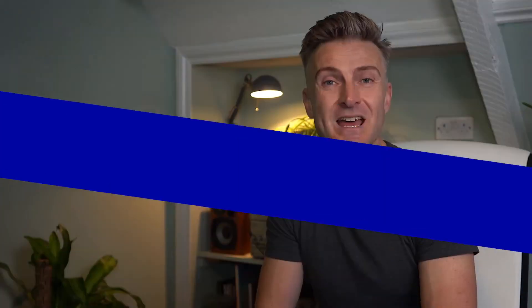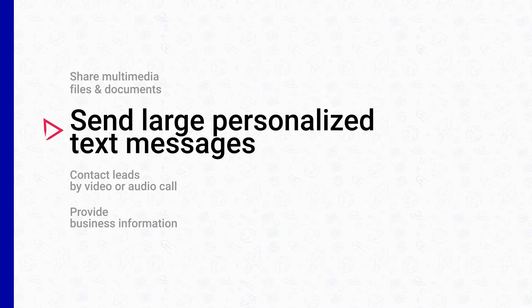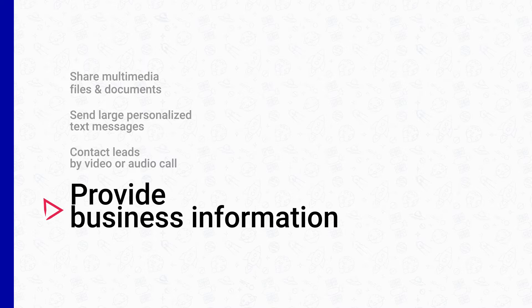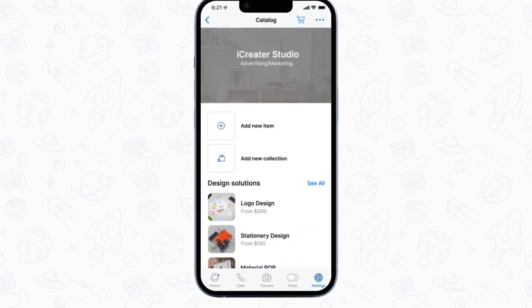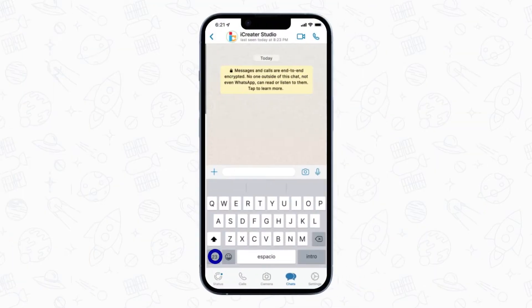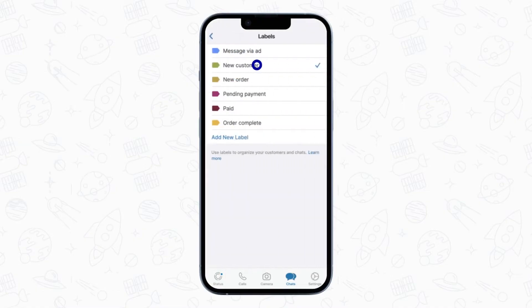Communicating with your Instagram followers in WhatsApp chat has quite a few advantages, especially when it comes to product inquiries and negotiations. Unlike Instagram, with WhatsApp you can share multimedia files and documents, send large personalized text messages — people are much more likely to read longer texts in a WhatsApp chat than on a social media platform. You can contact leads by video or audio call, which is extremely helpful when resolving customer objections or closing large deals. WhatsApp can also provide business information such as business hours, address, and websites. You'll be able to share your product catalog with contacts, upload photographs, prices, and descriptions. You can create quick reply templates to answer frequently asked questions, saving time in the long run. And you can add labels to your contacts' messages to keep them organized and speed up the search process.